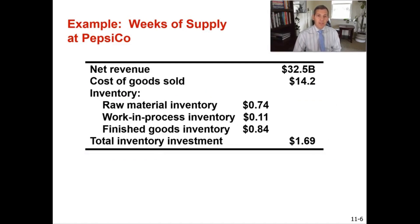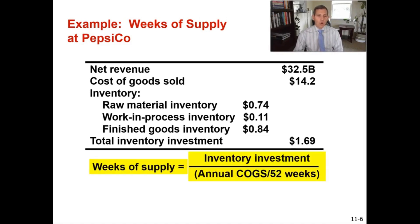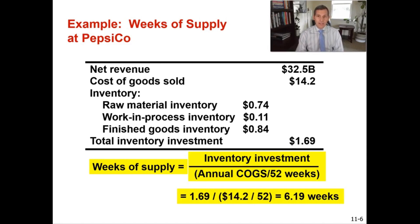Now let's calculate weeks of supply using PepsiCo again. They've got $32.5 billion in net revenue, cost of goods sold of $14.2 billion, and total inventory investment of $1.69 billion. To calculate weeks of supply, you take your inventory investment over your annual cost of goods sold divided by 52 weeks. That gives you 6.19 weeks of supply on hand at PepsiCo.